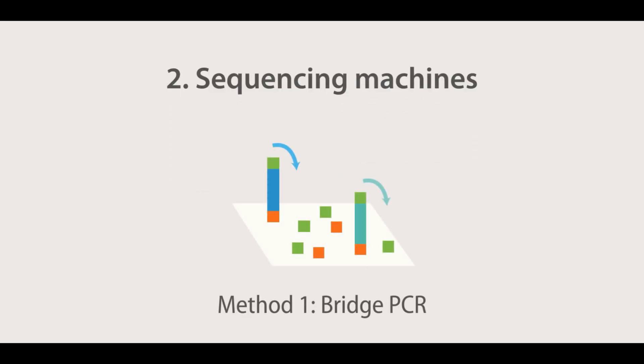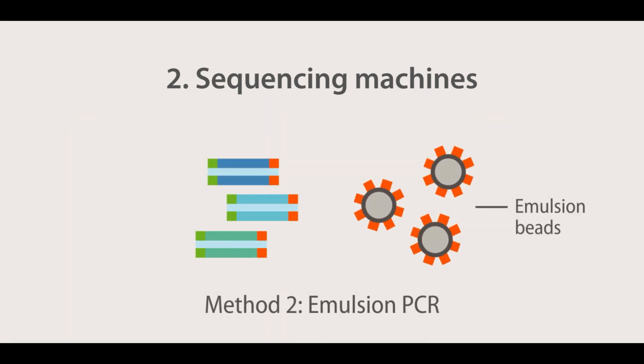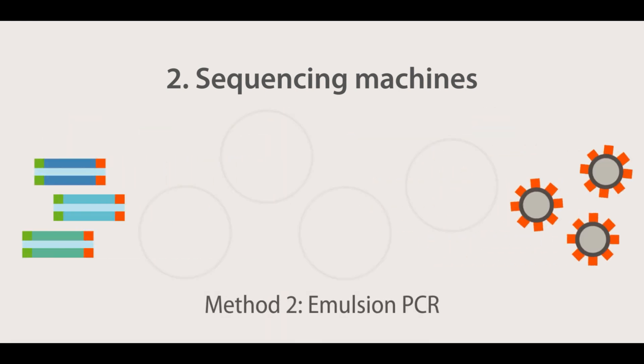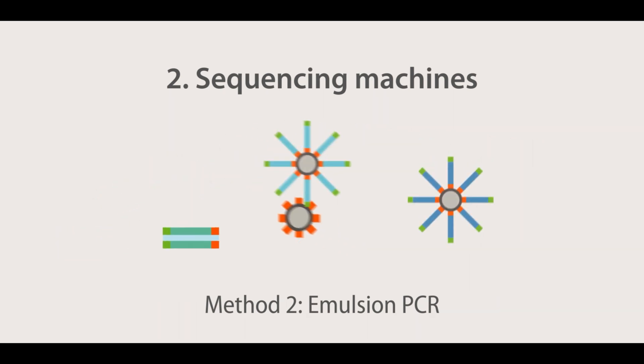Sequencing machines: Each library fragment is amplified on a solid surface with covalently attached DNA linkers that hybridize the library adapters. This amplification creates clusters of DNA, each originating from a single library fragment. Each cluster will act as an individual sequencing reaction.